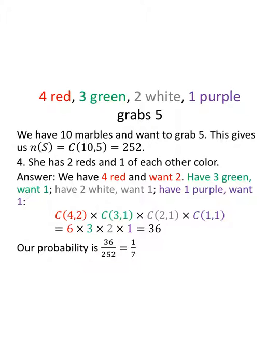So we multiply to get the next values. Find each of those combinations. We'll have six times three times two times one, which is 36, so our probability is 36 out of 252. One-seventh chance that this happens.